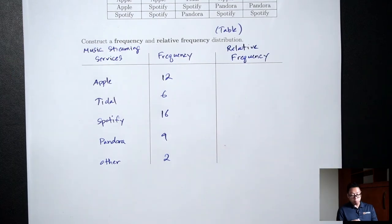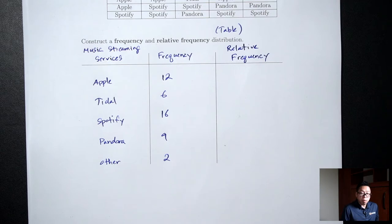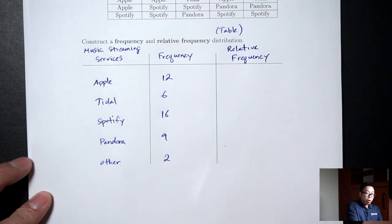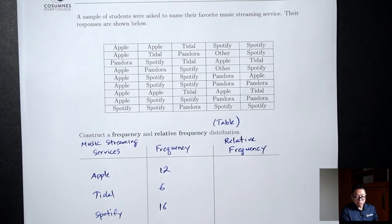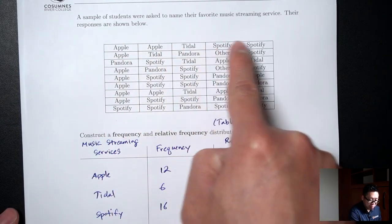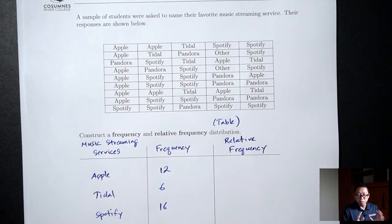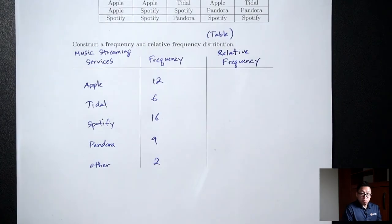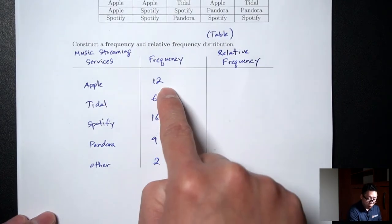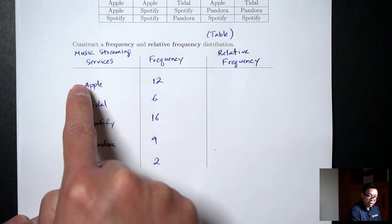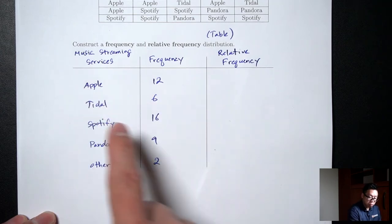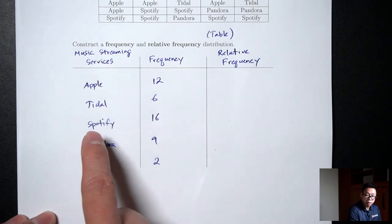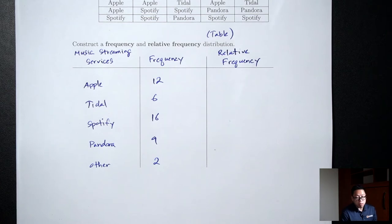How do we calculate the relative frequency? The first thing we need is the total number of people in our sample. One way to do that is to just count, but don't do that because we have the frequencies. The 12 means there are 12 people who liked Apple, 6 people who liked Tidal, 16 people who liked Spotify. So if you add up all the frequencies, that should give you the total number of people in our sample.